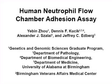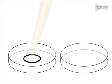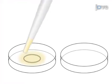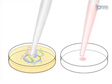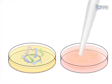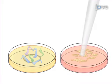The overall goal of this procedure is to measure neutrophil firm adhesion using a flow chamber assay that allows for human neutrophil adhesion in the presence of shear stress. This is accomplished by first preparing a substrate of purified adhesion molecules or an endothelial cell surface such as human umbilical vein endothelial cells, or HUVEC.